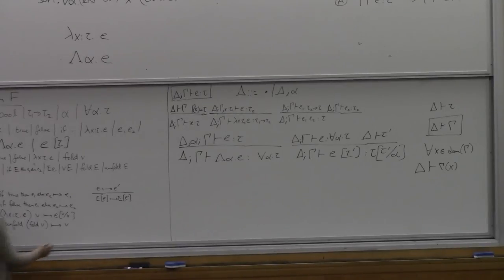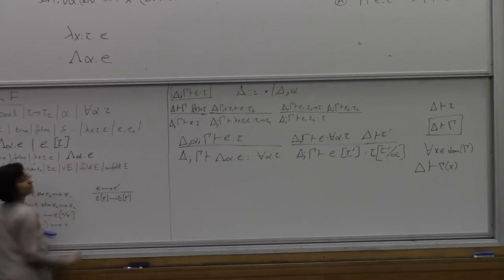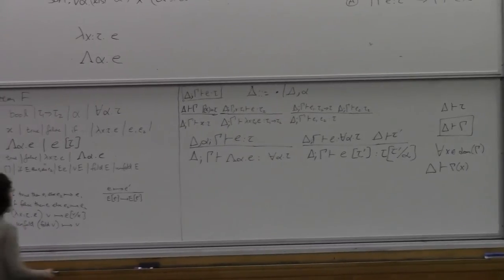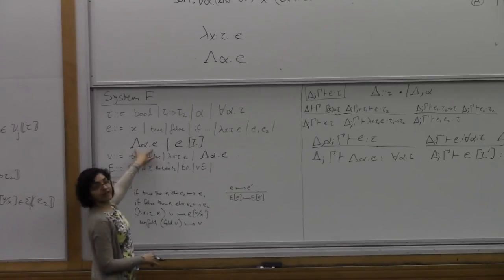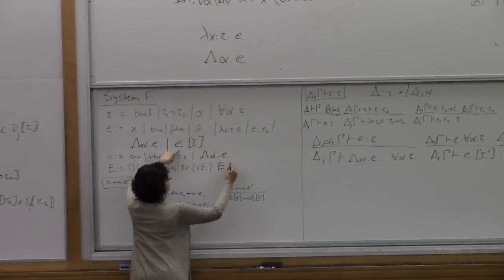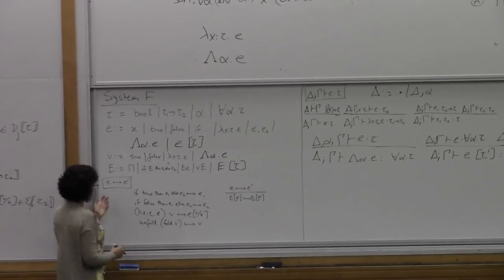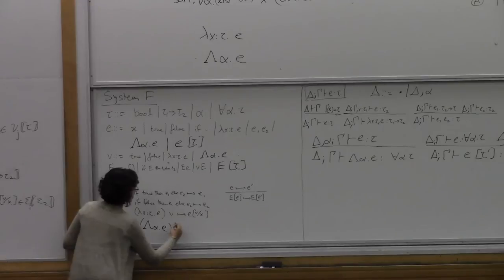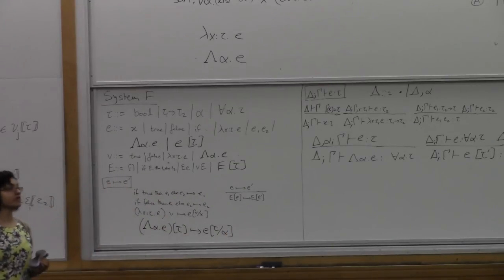We extend our values with lambda alpha e, since that is a suspended computation waiting for someone to apply it to a type. We extend evaluation contexts with a hole applied to a type. There's no concept of running types. The reduction rule is: lambda alpha e applied to type tau reduces to e with tau substituted for alpha in the body. So there is System F.